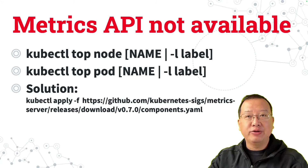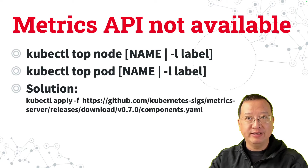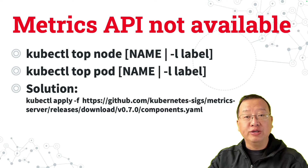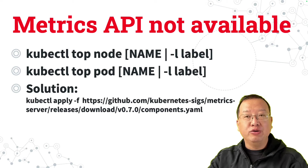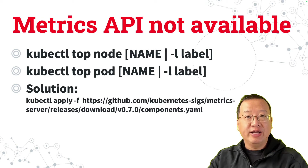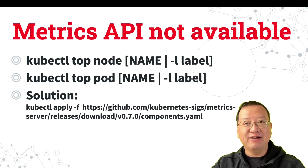If you encounter the metrics API not available error message when running kubectl top commands in AWS EKS, how can you resolve it? To fix the issue, simply run the kubectl apply command to install the metrics server. If you're curious to learn about the Kubernetes metrics server, let's dive in.